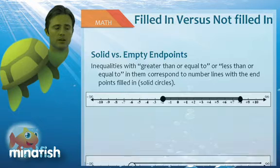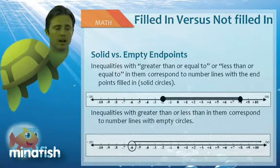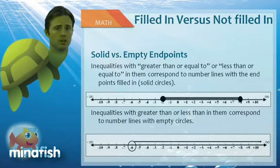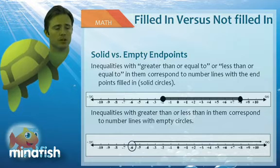Now with inequalities that say greater than or less than, without the equals, we don't want to count those outer points. So if we were to graph the equation x is greater than negative 6, we would want to circle the negative 6, not fill it in, because that point would not be true for our equation.